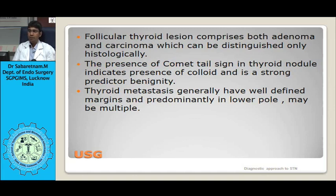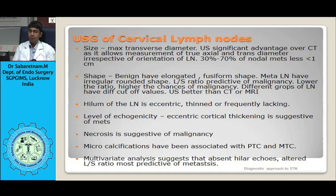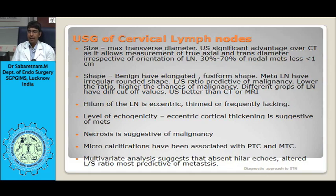Anaplastic carcinoma will have a hypoechoic tumor involving the whole lobe or gland with ill-defined margins and involved lymph nodes. Medullary thyroid carcinoma will show a solid hypoechoic nodule with echogenic foci in 80 to 90% of cases, due to amyloid deposition with associated calcification. Follicular thyroid lesions can comprise both adenoma and carcinoma; the presence of comet-tail artifact indicates strong colloid content and is a sign of benign nature.